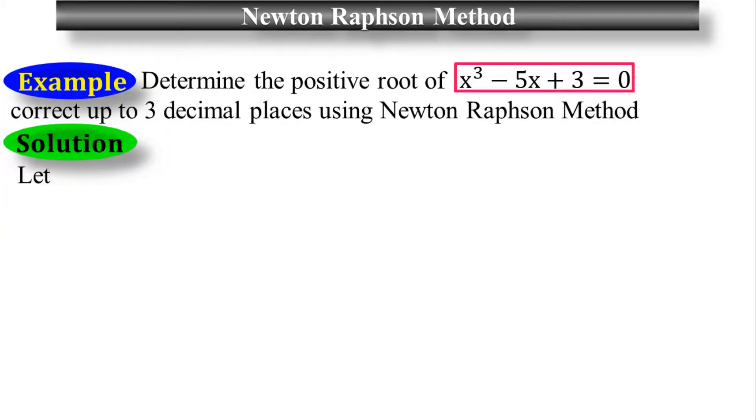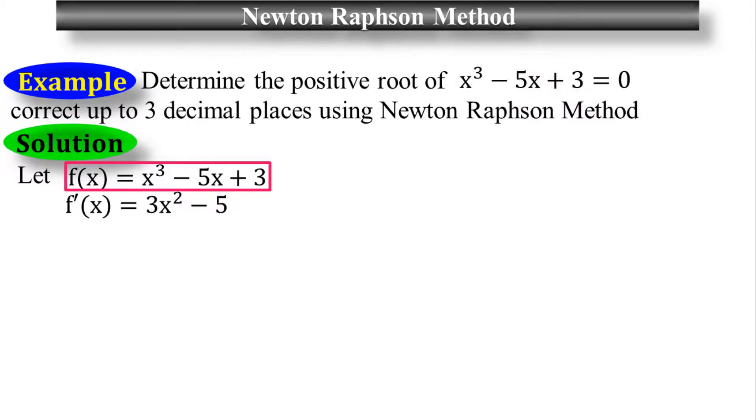Solution. Let the function f of x equals x cubed minus 5x plus 3. Step 1: Find the derivative of function f of x, which is 3x squared minus 5. Step 2: Identify the initial value.